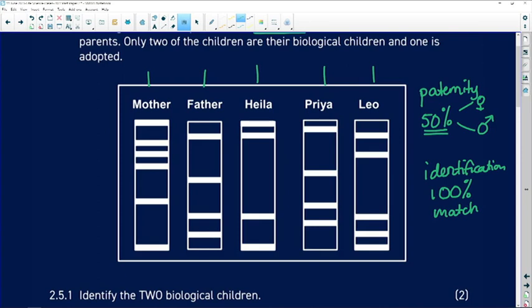So we go to the mother and we see that Hela has that stretch of DNA that matches the mother. But we can't make our decision based on one piece of evidence only. Priya and Leo don't have that match. We see that Hela also has a match to her father with a second stretch of DNA.